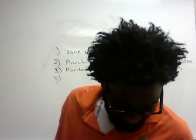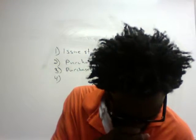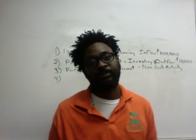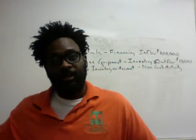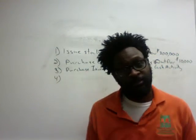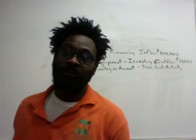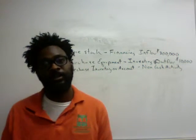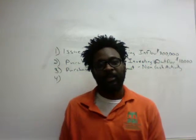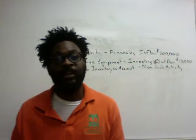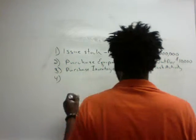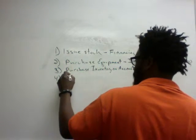Transaction four: credit sales for the month total $12,000, and the cost of goods sold was $7,000. We sold something on credit — the journal entry is debit accounts receivable, credit sales revenue. No cash was involved, so this is yet another non-cash-related activity.